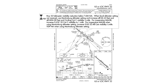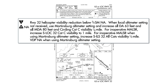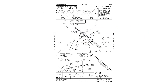In the notes section, we see a black triangle with an A in it, meaning there are non-standard alternate minimums, but then it says NA. This means alternate not allowed. We can't use this approach in planning our alternate. Why might we not be allowed to use this ILS in our planning?